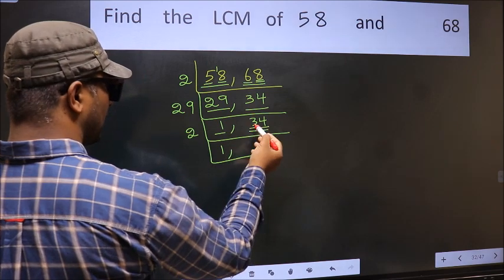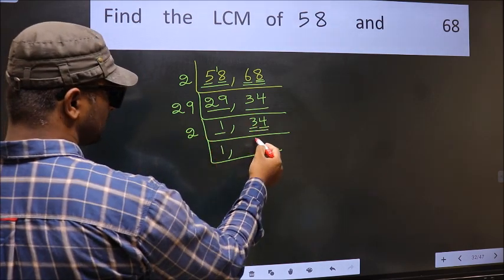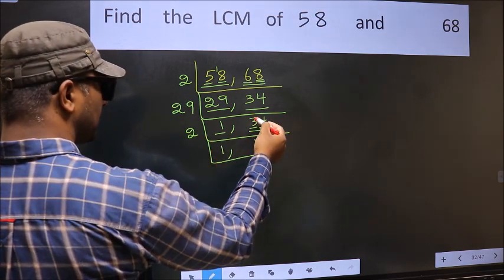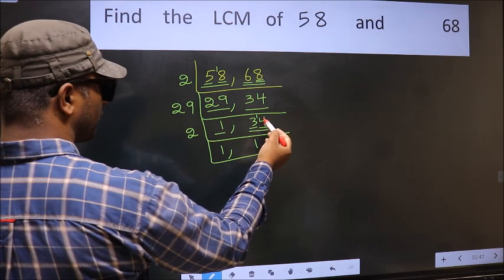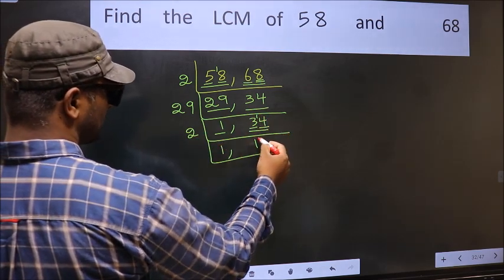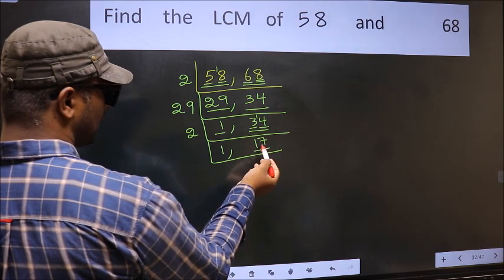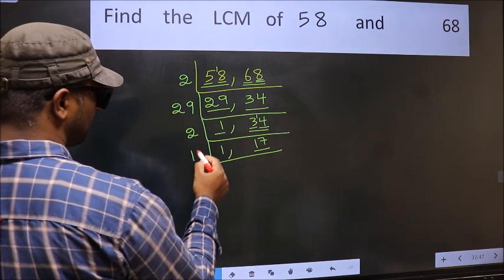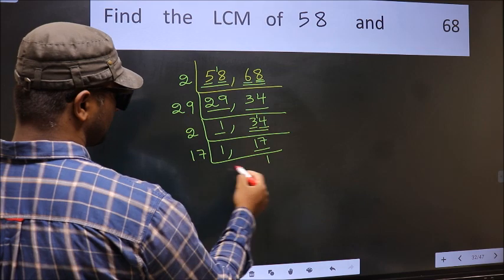First number, 3. A number close to 3 in 2 table is 2, 1 is 2. 3 minus 2, 1, 1, carried forward 14. When do we get 14 in 2 table? 2, 7 is 14. Now here we have 17. 17 is a prime number. So 17, 1 is 17.